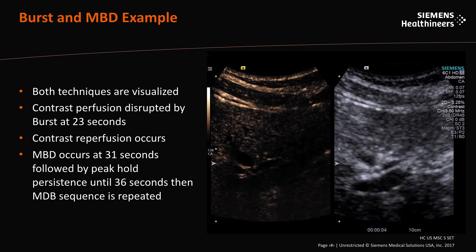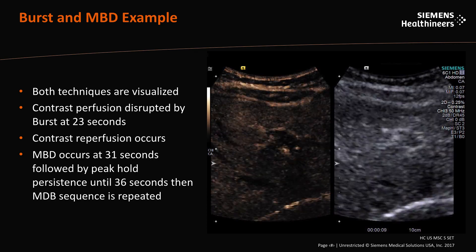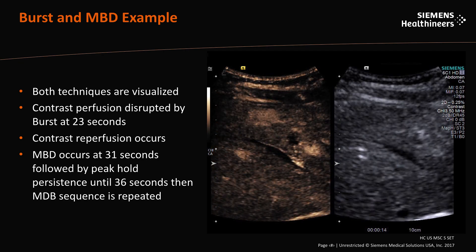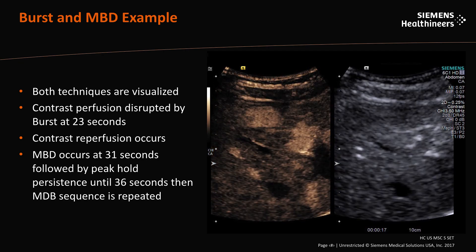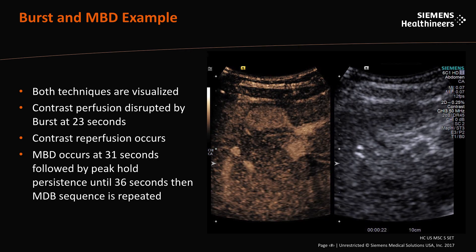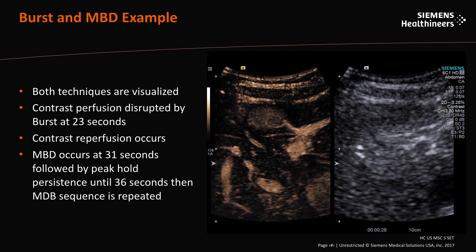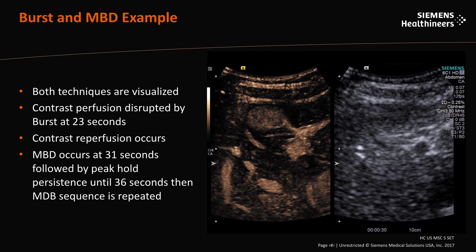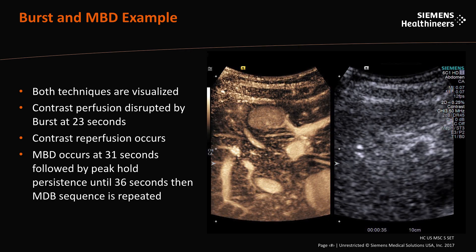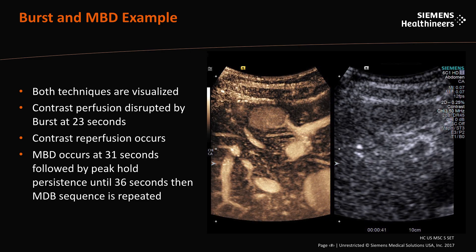Both techniques are visualized in the same clip. Initial contrast perfusion in the region of interest occurs until 22 seconds into the clip. At 23 seconds the burst is applied and the contrast momentarily disappears from the image as the bubbles are destroyed. Contrast reperfusion occurs until the MBD is applied at 31 seconds and destroys the bubbles again. Immediately following the MBD is the peak hold persistence that holds the image and layers the contrast within the image. The MBD sequence is then repeated a second time.